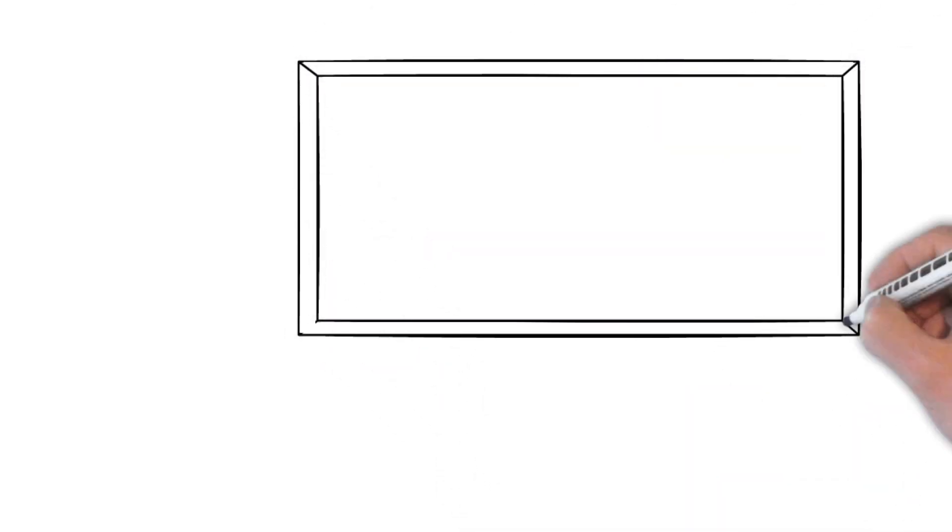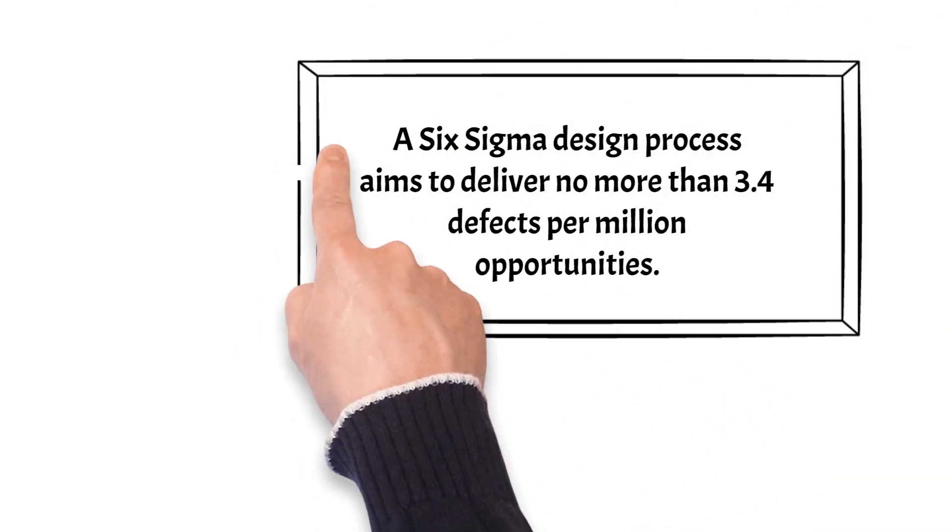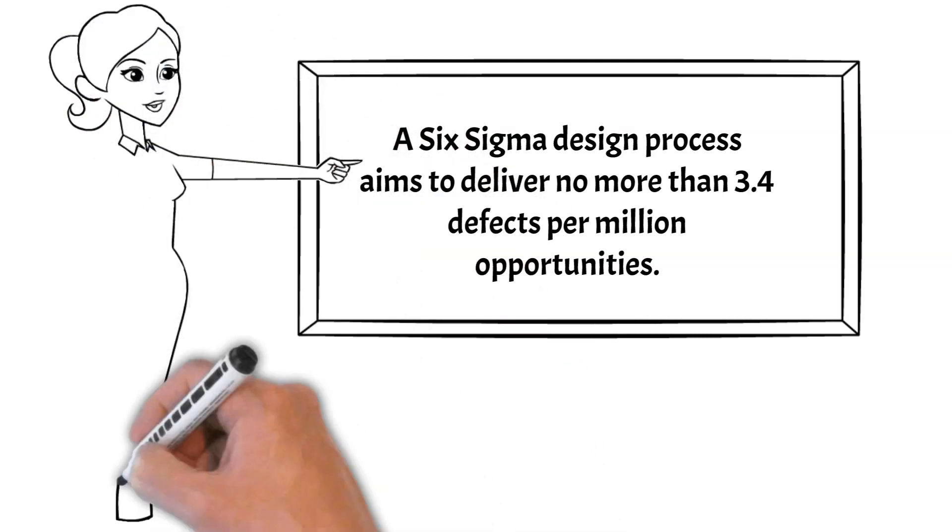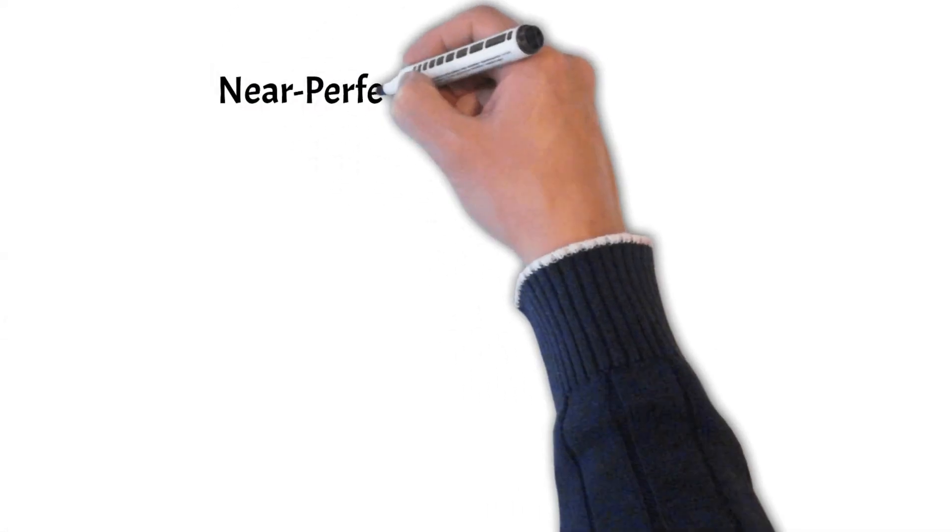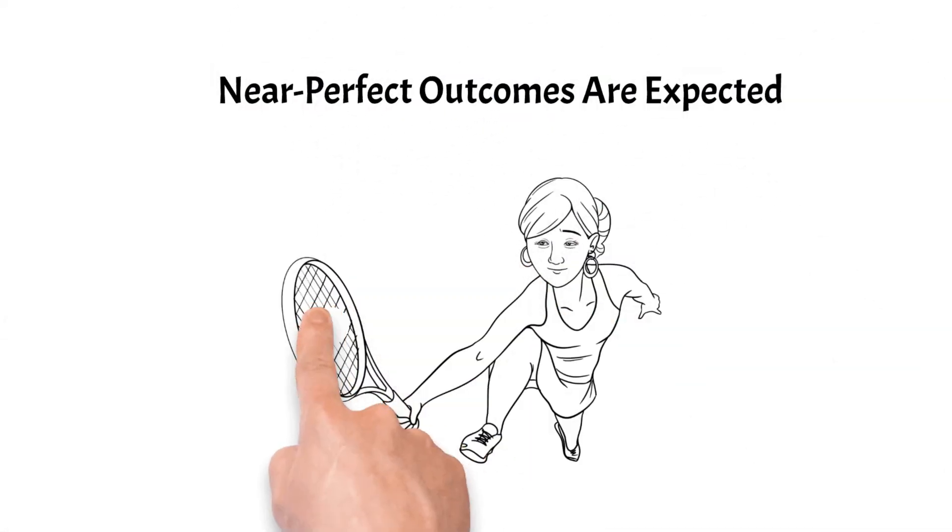Six Sigma is very explicit. A Six Sigma design process aims to deliver no more than 3.4 defects per million opportunities, suggesting that near-perfect outcomes are expected.